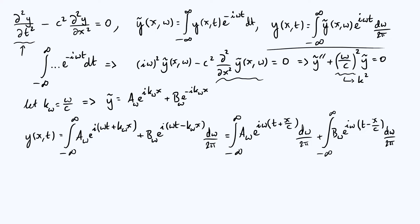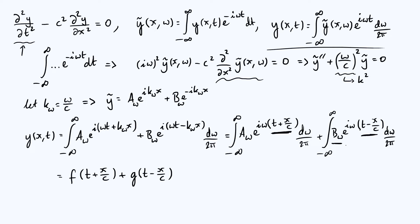The final step is basically just to notice that each of those integrals has exactly the same form as the integral in an inverse Fourier transform, except instead of i omega t, you have i omega times (t plus x/c) in the first one, and (t minus x/c) in the second. So an alternative way of writing all that — a much simpler way — is that the first integral is just some function f of (t plus x/c), where f is the function whose Fourier transform is a(omega). Similarly, the second integral is just any function g of (t minus x/c), where g is the function whose Fourier transform is b(omega).